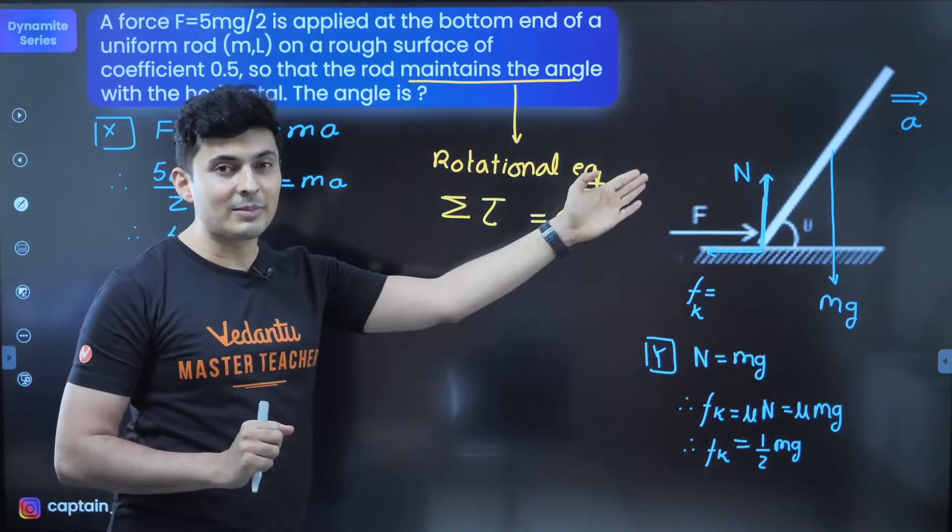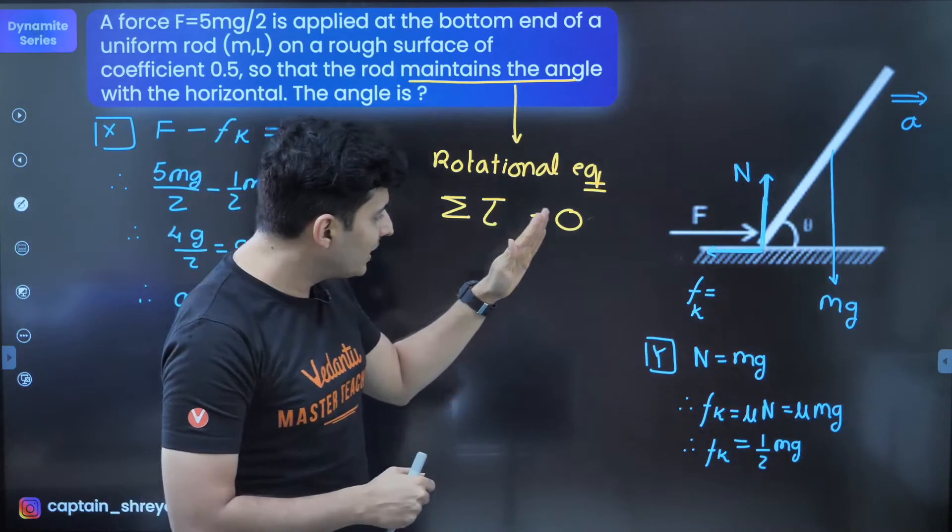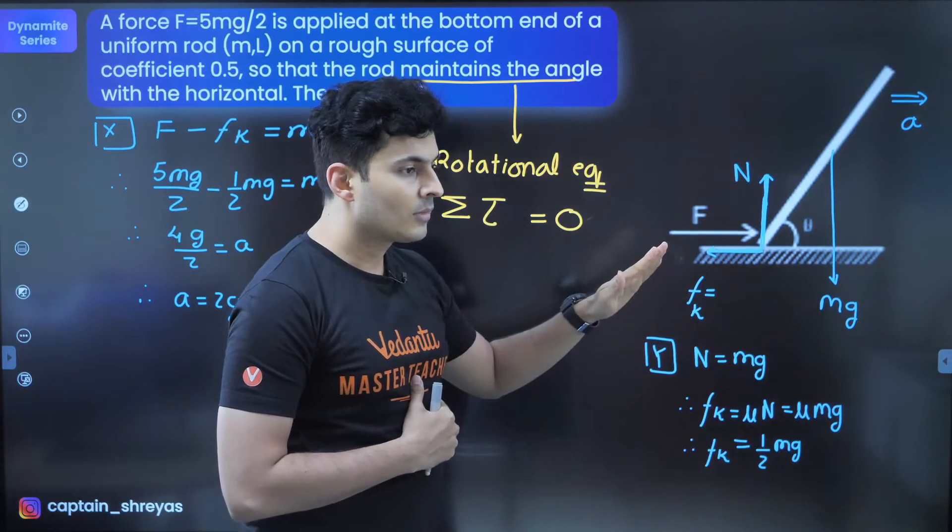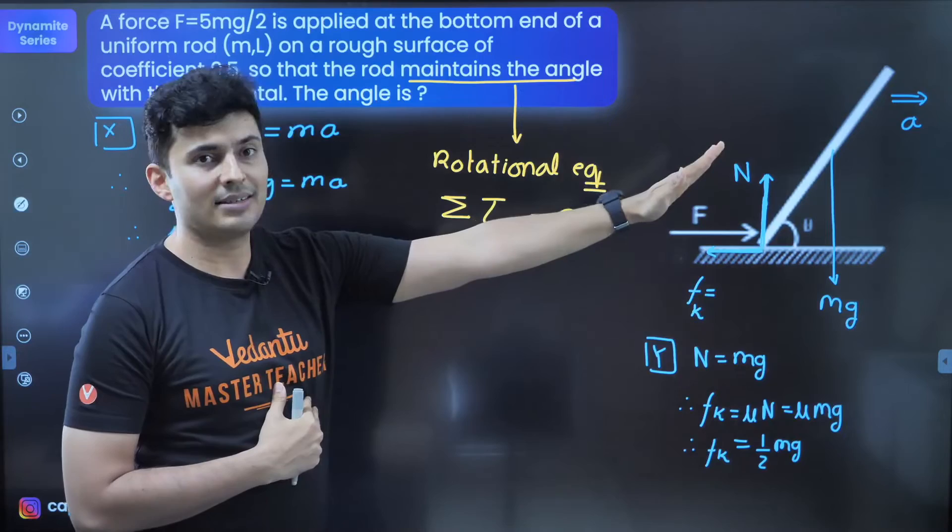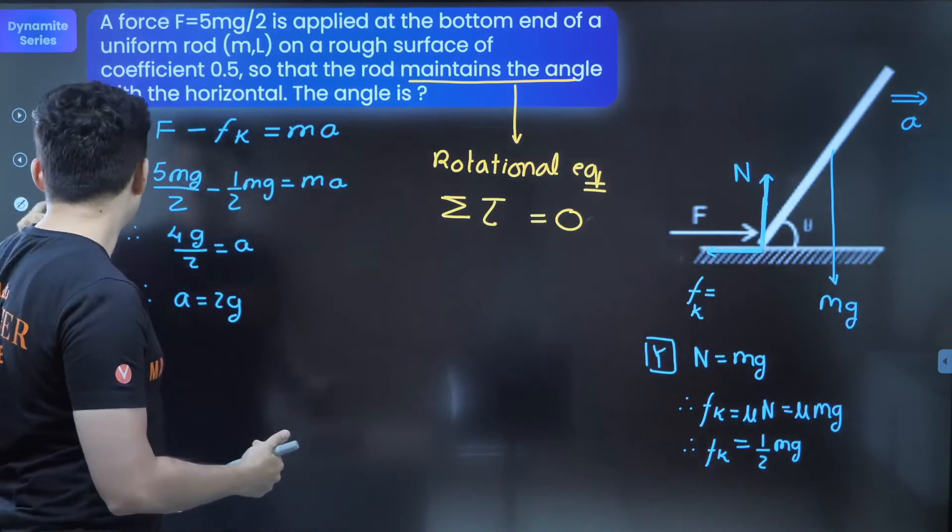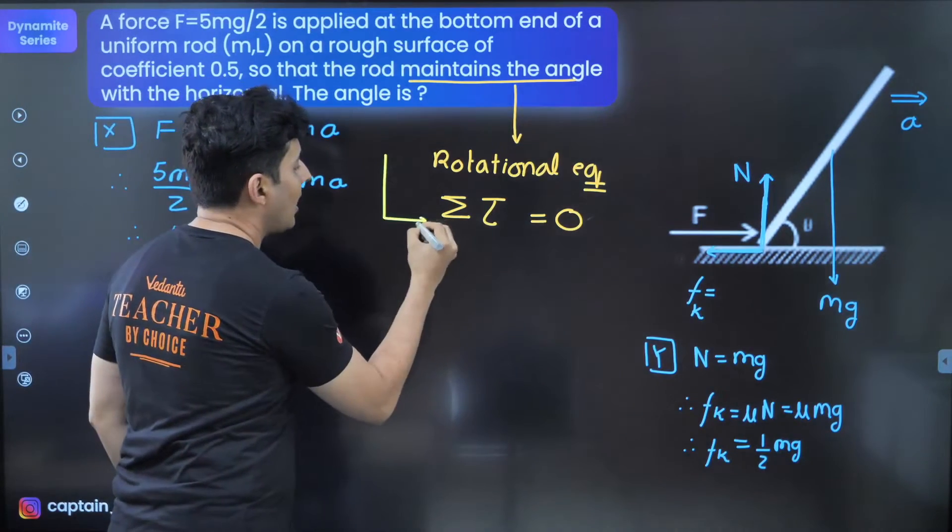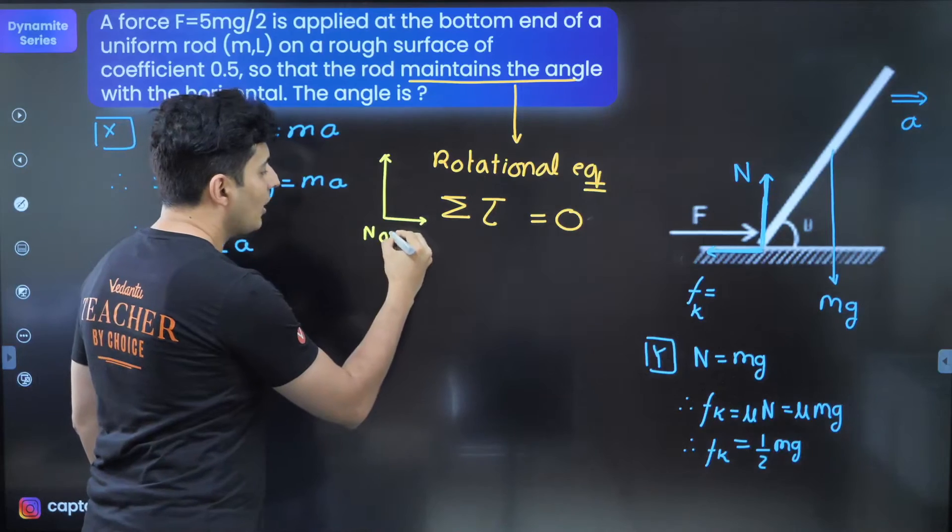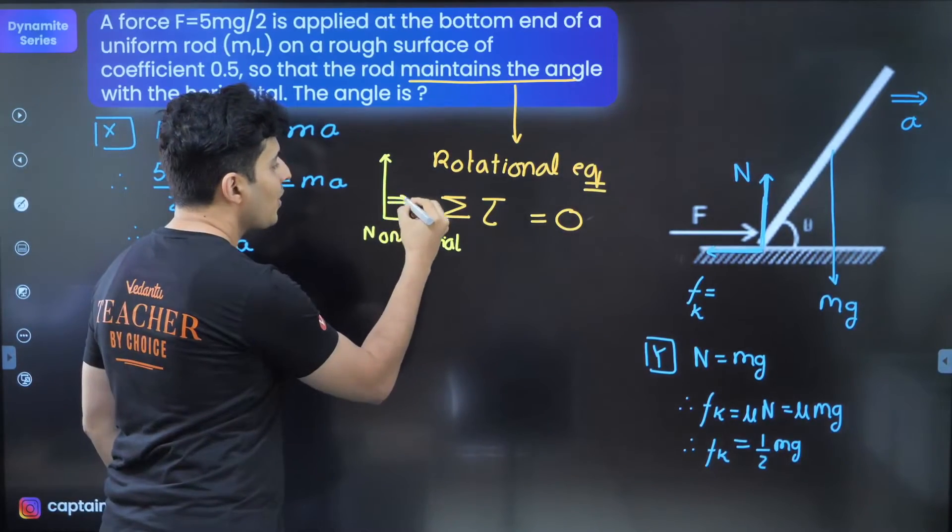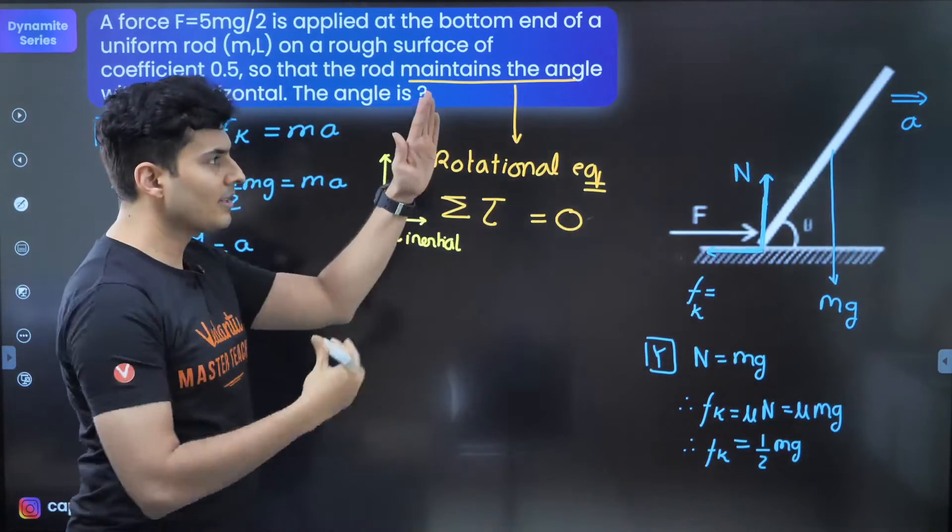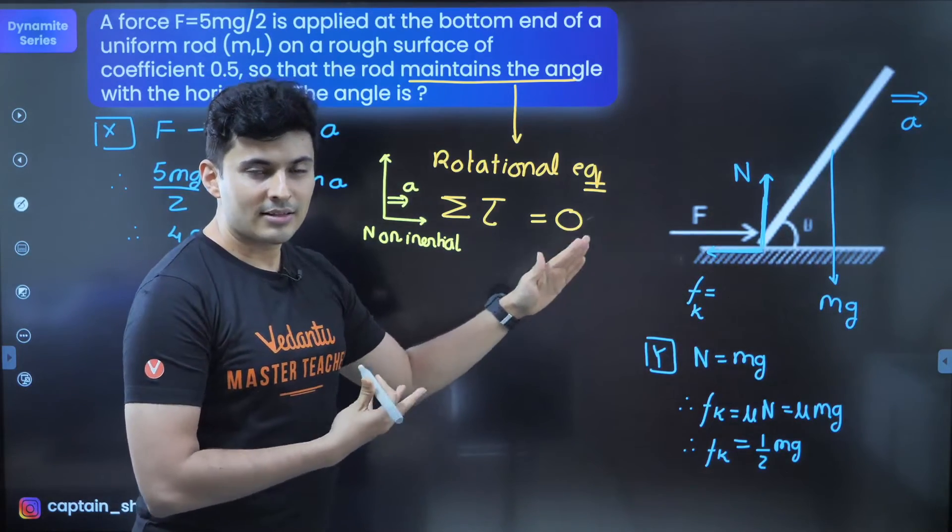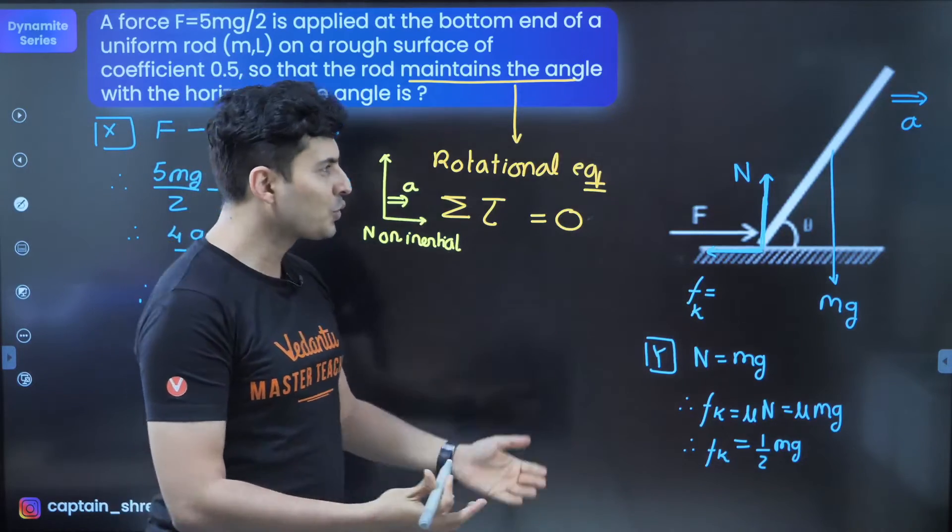Most of you will go for either this point or this point, which is fairly good. But there is one catch in the problem. When I say it is in rotational equilibrium, it means that if you move with the rod, if you are in motion with the rod, the rod will appear to be at rest. Not from outside. Because from outside, the rod is actually moving. It's translating. I need to move with the rod. That means I need to be in an accelerated frame, a non-inertial frame of reference. I need to accelerate with it. Then I will see that yes, the rod is at rest. The net torque is 0.